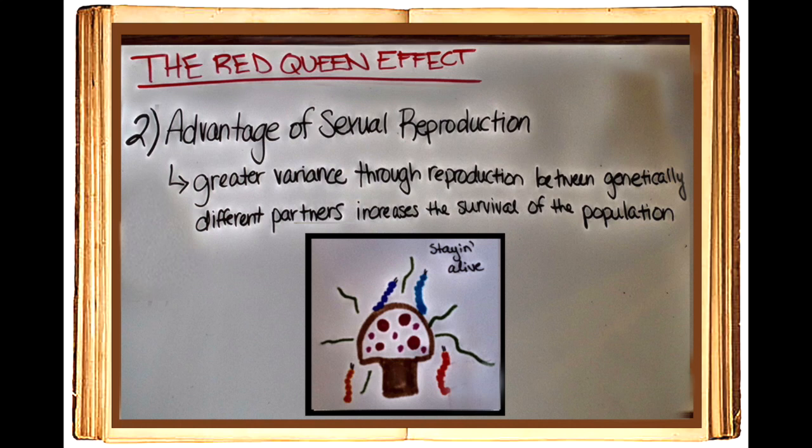This example shows how sexual reproduction contributes to the Red Queen effect. Since sexual reproduction results in a greater ability for adaptation on behalf of the caterpillars, the mushroom can keep on producing toxins, but the caterpillars will continue developing resistance to the toxins at the same rate, resulting in, once again, the co-evolution of the two species.